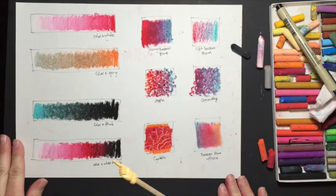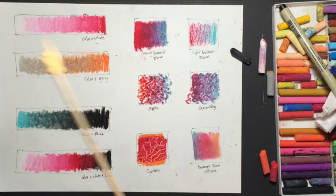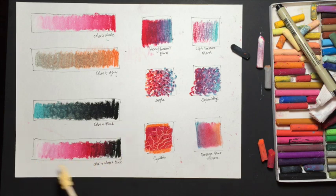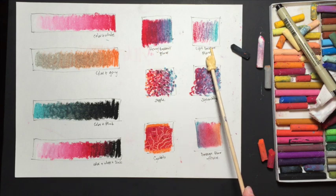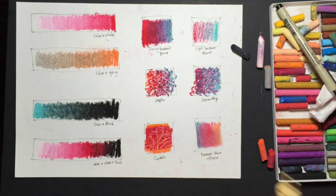Let's go over the different techniques we just learned. So we have color plus white, and this is a heavy pressure blend, color plus gray, color blended into black, a color blended into black and white, the whole range of values. This is a heavy pressure blend, a light pressure blend, stipple, scrumbling, sgraffito, and a pressure blend.